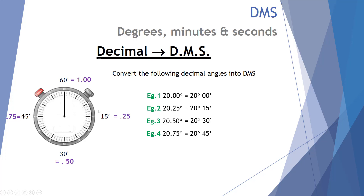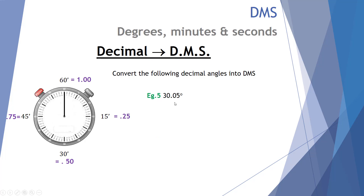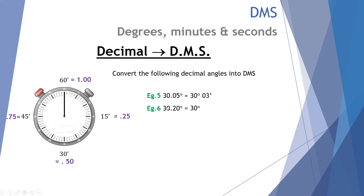Those are the simple examples we can find from the clock. Let's look at a couple more. How about an angle of 30.05 degrees? That equals 30 degrees, and then 0.05 of a full 60 minutes — so 0.05 times 60 gives 3 minutes. So 30.05 is the same as 30 degrees and 3 minutes. How about 30.20 degrees? That's 30 degrees, and 0.20 times 60 gives 12. So that becomes 30 degrees and 12 minutes.